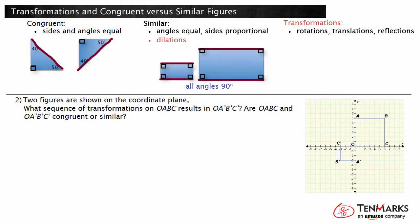Let's look at another example. Two figures are shown on the coordinate plane. What sequence of transformations on figure O, A, B, C results in figure O, A', B', C'? Are O, A', B', C' and O, A, B, C congruent or similar? In this problem, the image O, A', B', C' has shorter sides than the original.